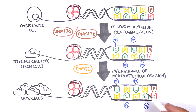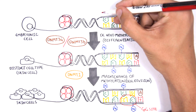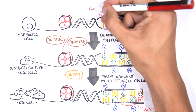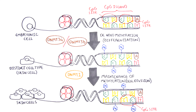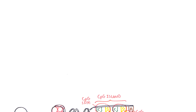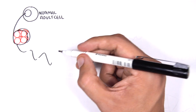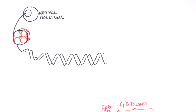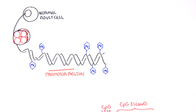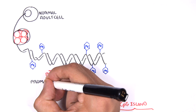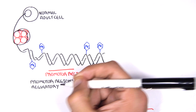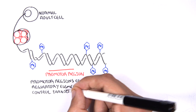Cytosine guanine sites, or CpG sites for short, are found all over our DNA. Here we have a CpG island containing many CpG sites. In a normal adult cell, most CpG sites are methylated, except in promoter CpG islands, where these CpG sites are typically unmethylated. Promoter regions are regions in the DNA that contain regulatory elements that control transcription of genes.